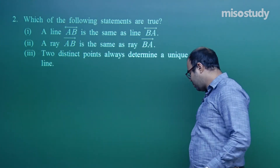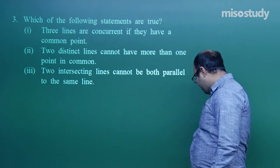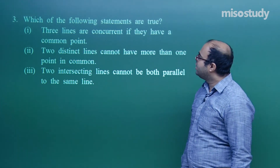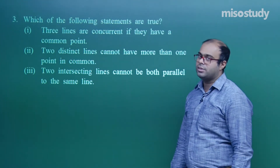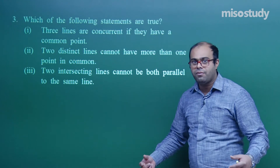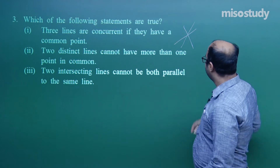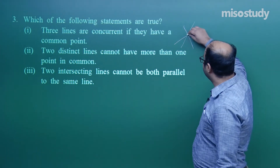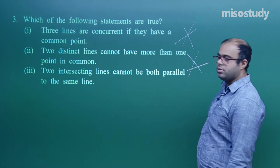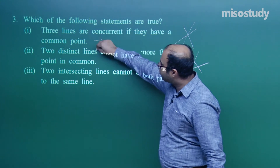Another one-mark true/false question. First statement: three lines are concurrent if they have a common point. Yes, this is the definition of concurrency — if lines have a common point then they are said to be concurrent. Lines that do not share a common point are not concurrent. So this statement is true.